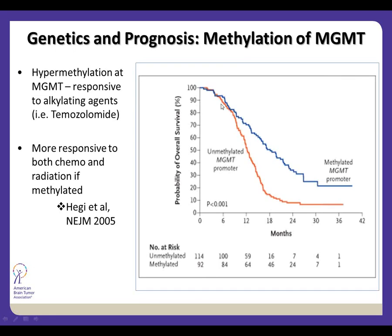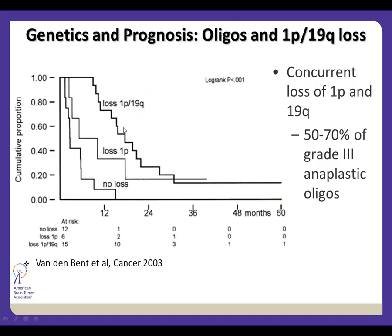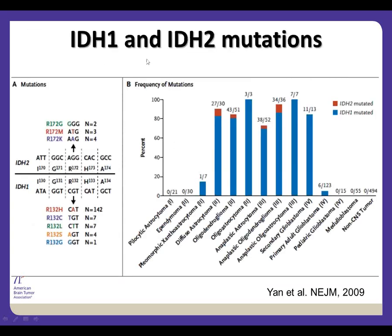Other important biomarkers include losses of chromosomes 1p and 19q, especially for oligodendrogliomas. Recent work has focused on IDH1 and IDH2 mutations — present in all gliomas but most common in WHO grade 2 and grade 3 gliomas, and relatively uncommon in glioblastomas. There is also the DNA hypermethylator phenotype — a pattern where many genes across the genome are turned off — and those tumors show better survival.